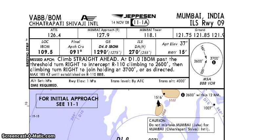So let's start with the approach briefing. This shall be a VOR ILS approach for runway 09 at Mumbai Chhatrapati Shivaji International Airport, India. Chart date: 14 November 2008. Chart index number: 11-1 Alpha.